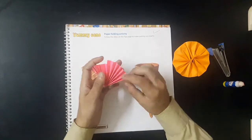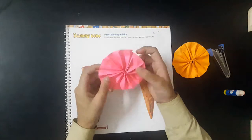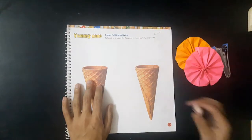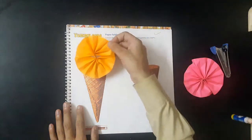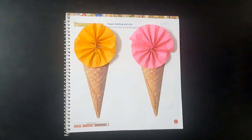Glue the other side to complete a circular shape. Now apply glue on top of the cones and paste your ice cream on the cones. Your cones will look like this.